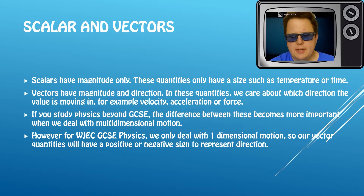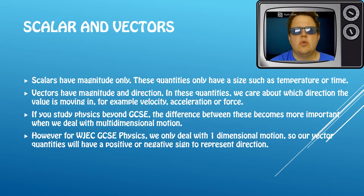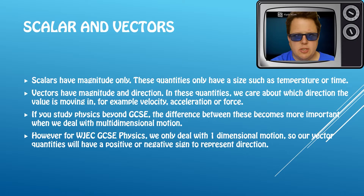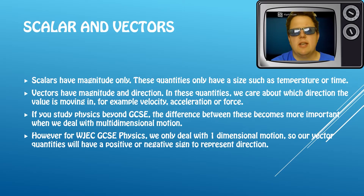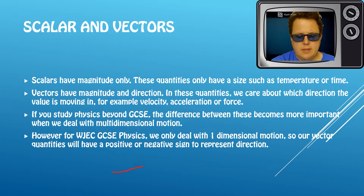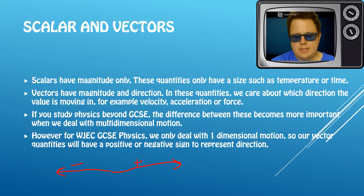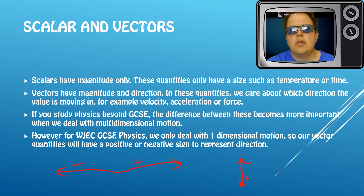For GCSE, at least WJC GCSE, we only ever deal with one-dimensional vectors, so we'll only ever deal with a quantity going up or down, or left or right. We won't deal with two dimensions until A-level. For us that makes it dead simple — we represent the direction of a vector with a sign, plus or minus. So it might be that going one way is the positive direction and the other way is the negative direction.